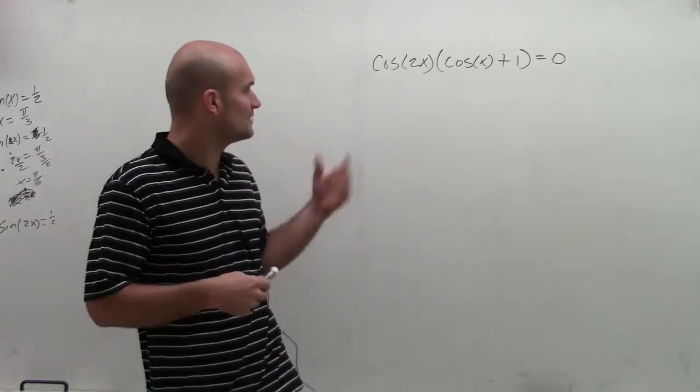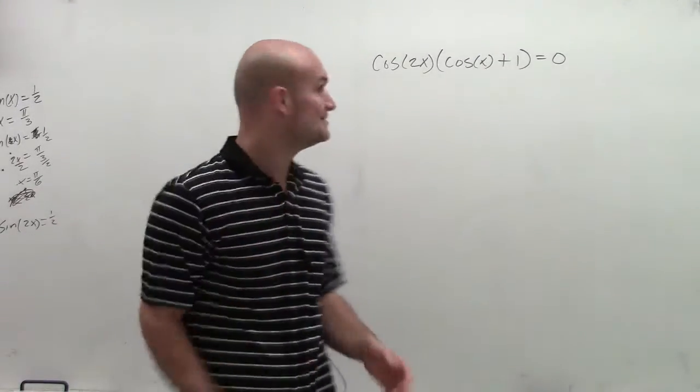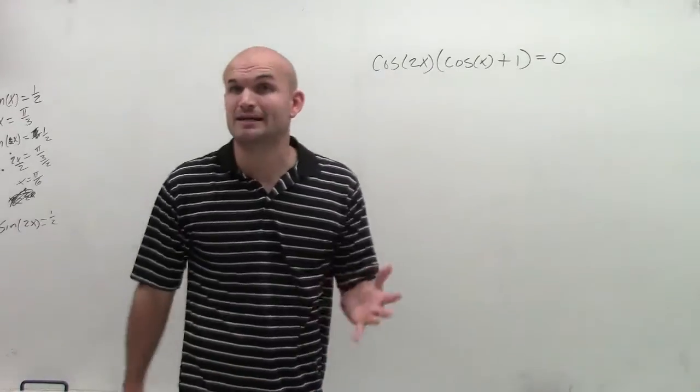Welcome. So here I have cosine of 2x, which is a multiple angle, and I have cosine of x plus 1 equals 0.